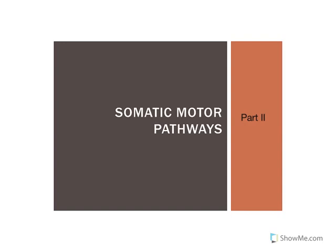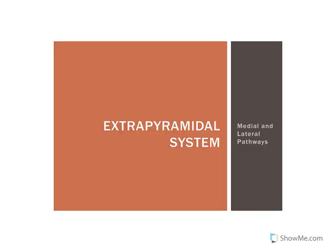This is the second part of the somatic motor pathways to help you review them for your exam. This one covers the pathways involved in the subconscious control of muscle — part of the extrapyramidal system. They're referred to as the medial and lateral pathways. We're going to look at one tract in the lateral pathway and three in the medial pathway.